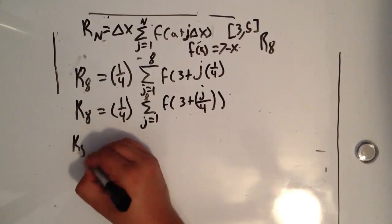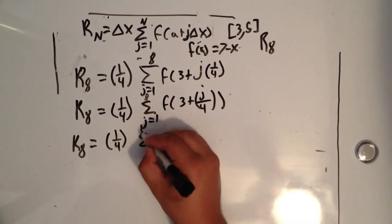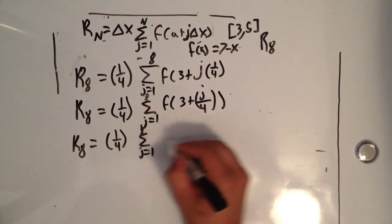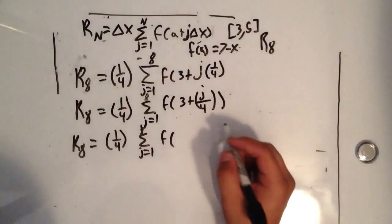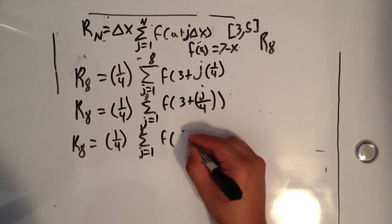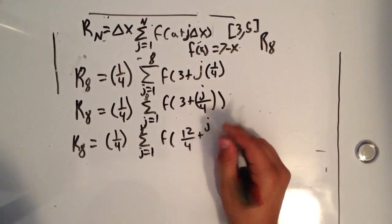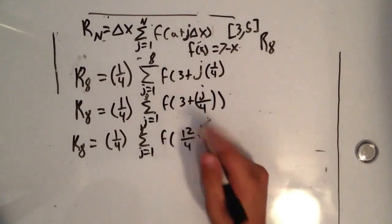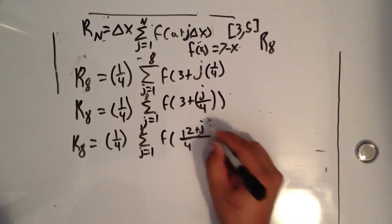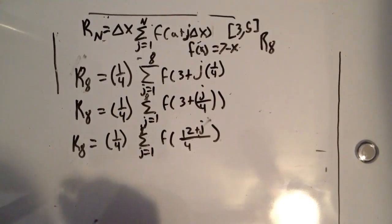So R(8) = 1/4 times the summation from j = 1 to 8 of f of (12 + j) over 4, after getting common denominators. And that's pretty much as far as we can go in simplified form for now.